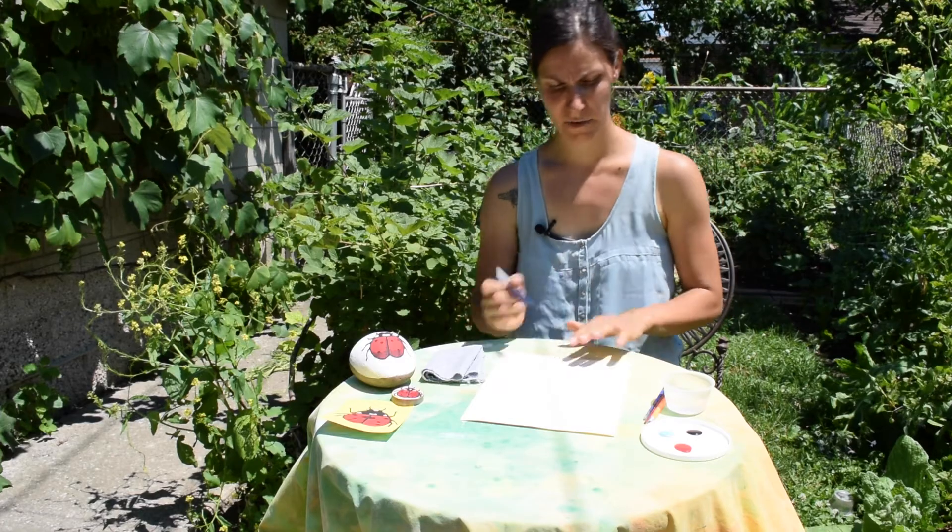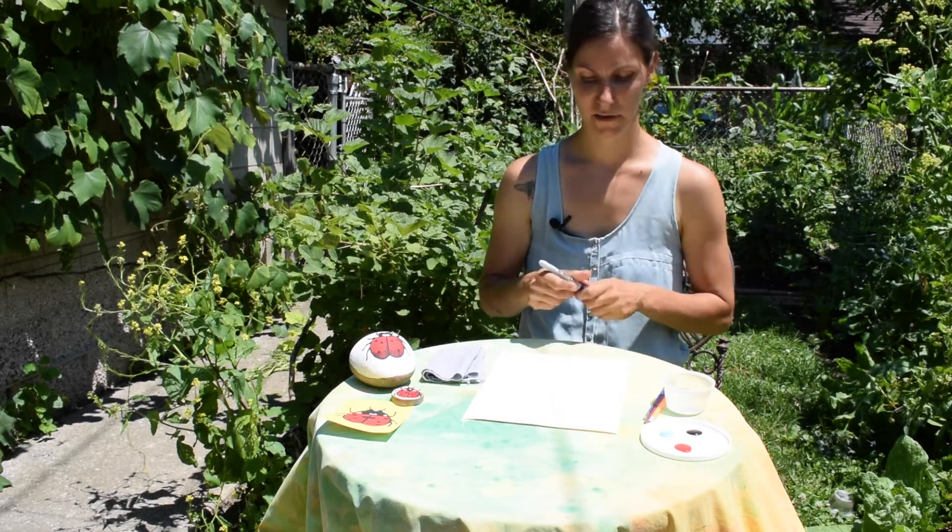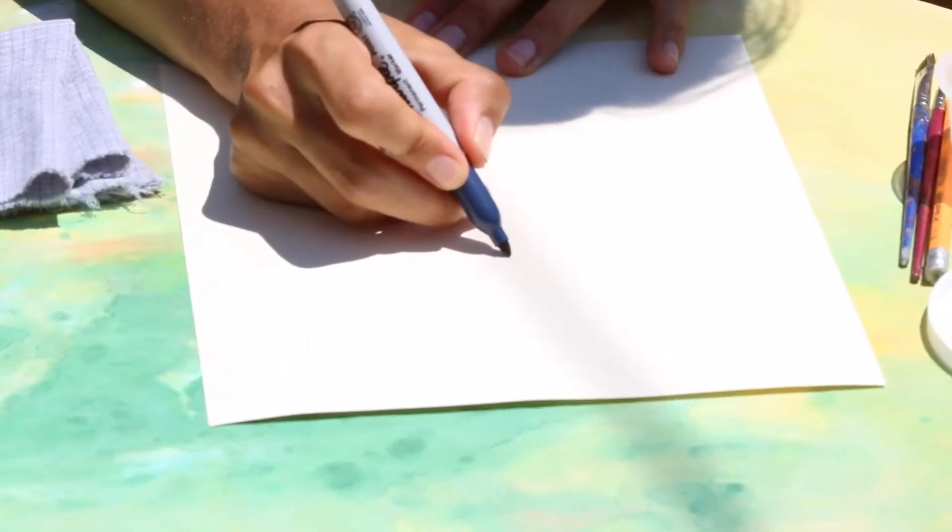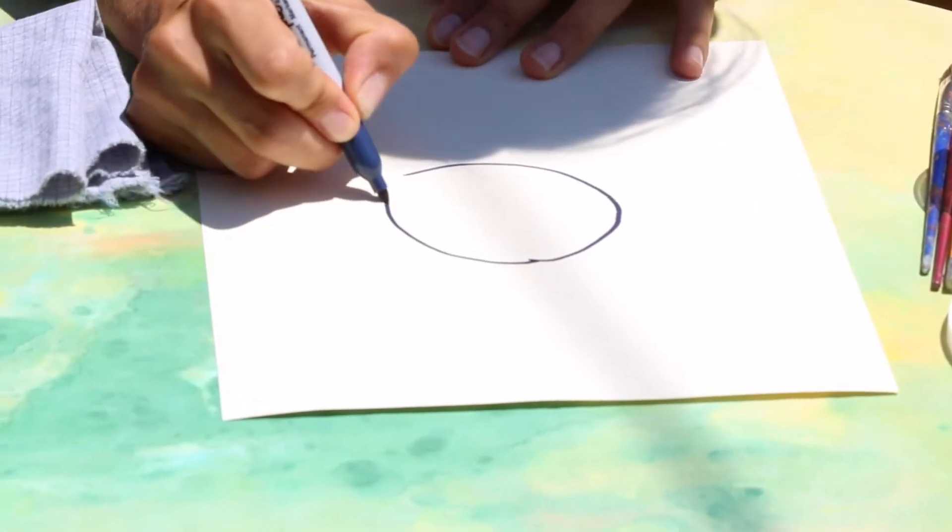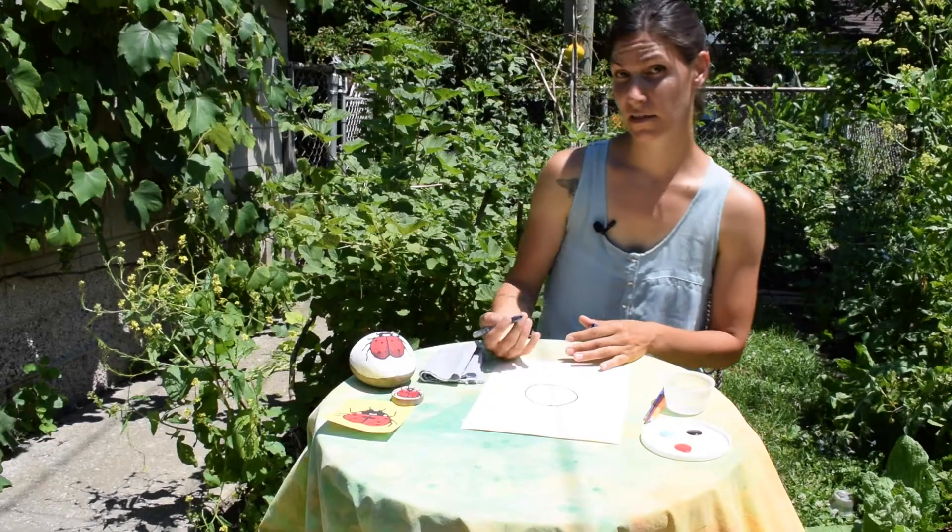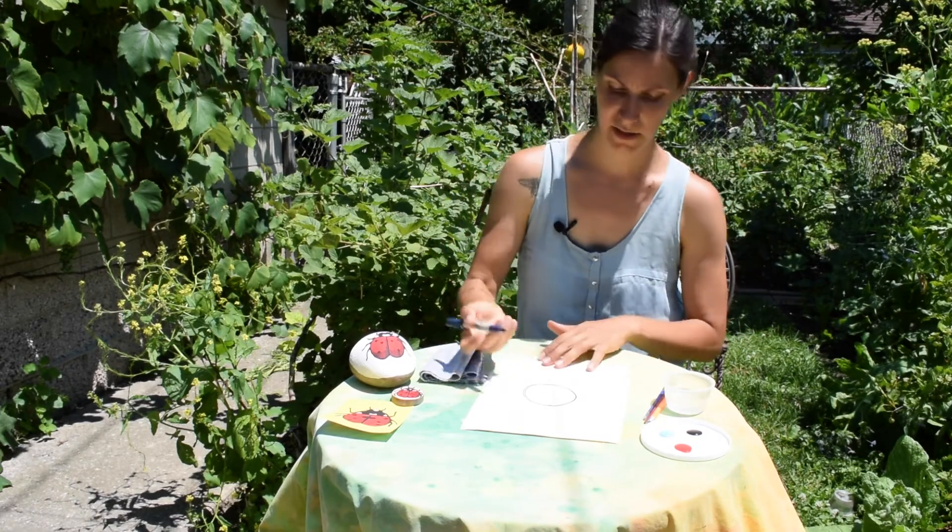We're going to start with the circle. I'm going to use a sharpie instead of a pencil just so that it shows up better for the camera. So we start with our circle, and since this is just a sketch to get an idea, we don't have to be too perfect with anything.